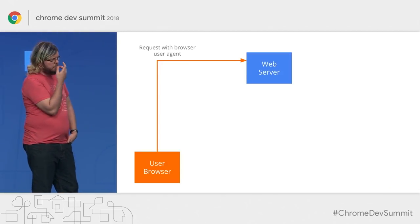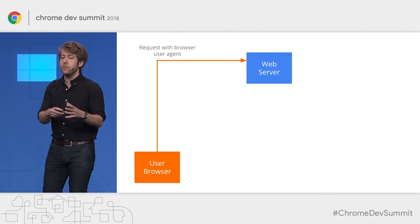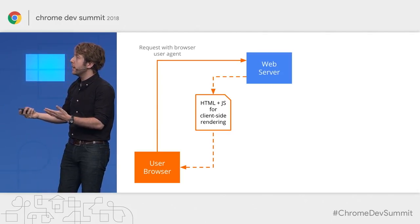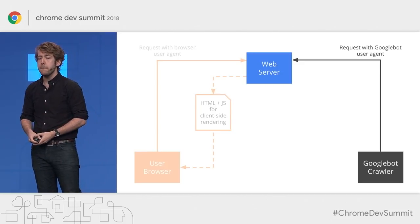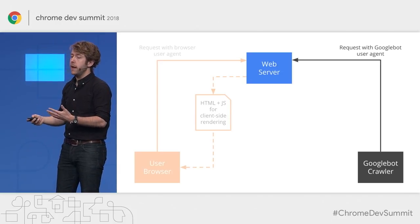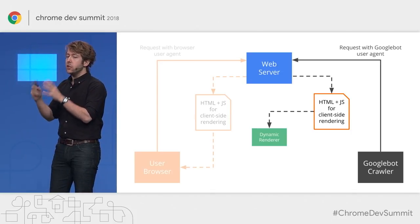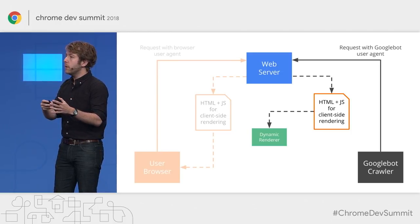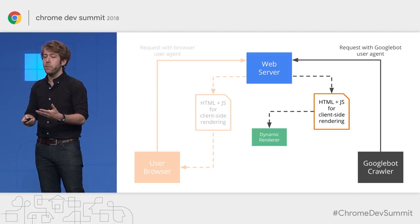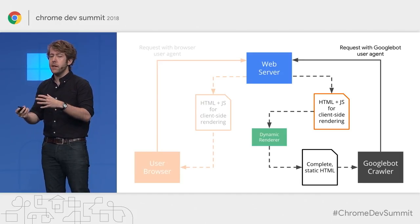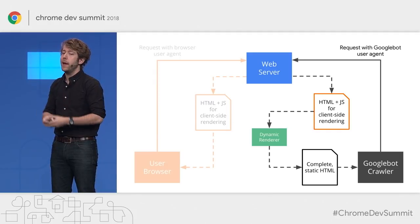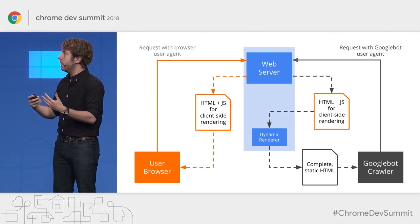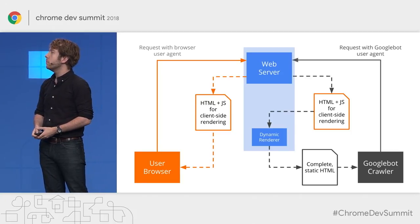TOM GREENAWAY: Here you can see how a server identifies that the device requesting the page is a user browser, and then it serves a payload of HTML and JavaScript that gets rendered on the client. But when a crawler like Googlebot makes a request, the server sends a different payload. Instead of sending the HTML and JavaScript directly to the crawler, we send it to the dynamic rendering service and run the payload through that service. The dynamic renderer then spits out a completely statically rendered HTML payload for the crawlers. That dynamic renderer could be an external service or running on the same web server infrastructure.